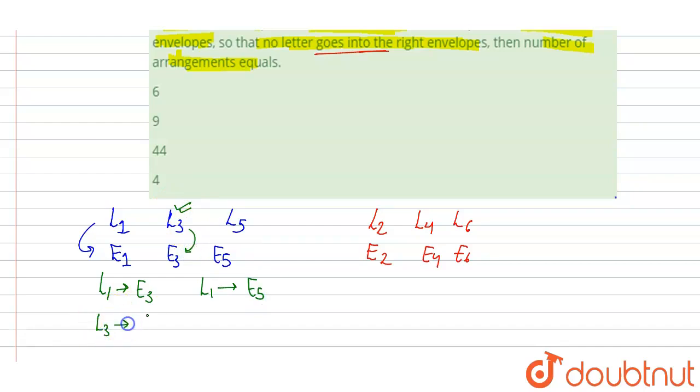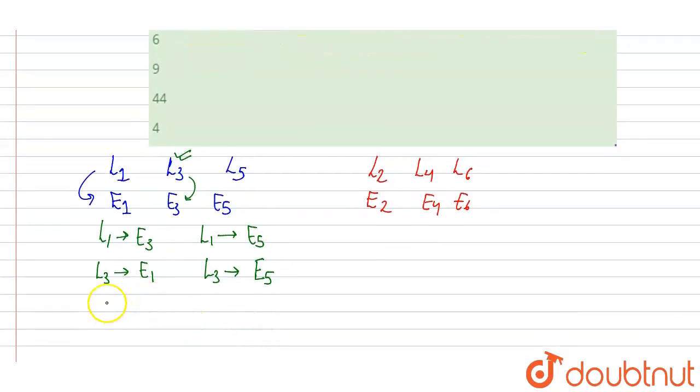Now for letter 5, L5 can't go in E5, in the correct letter, it means L5 will go either in E1 or L5 can go either in envelope 3. So now with the odd letters.